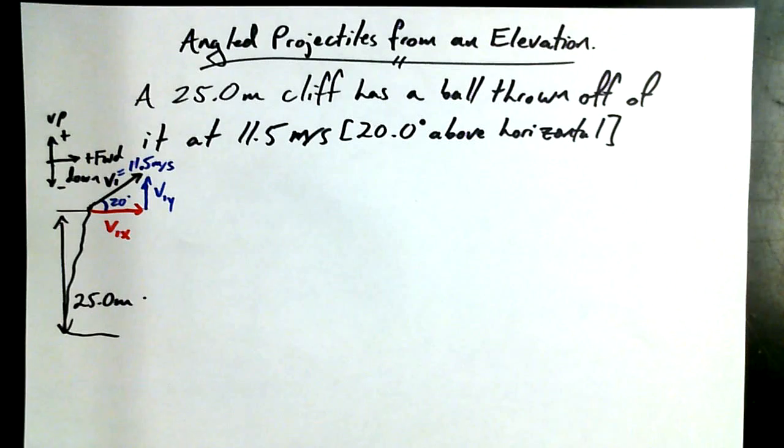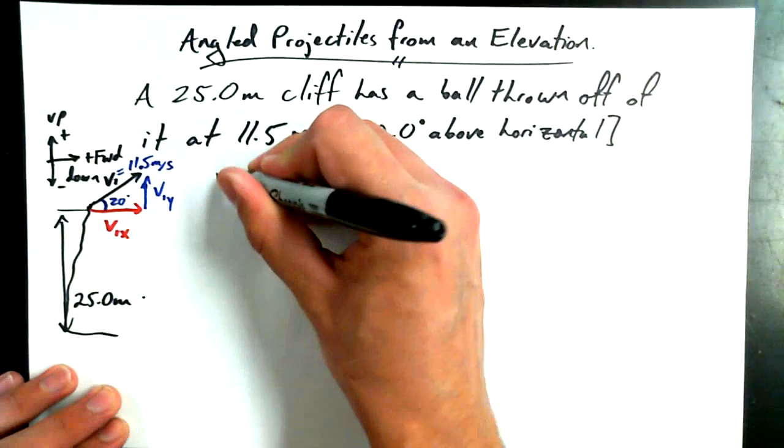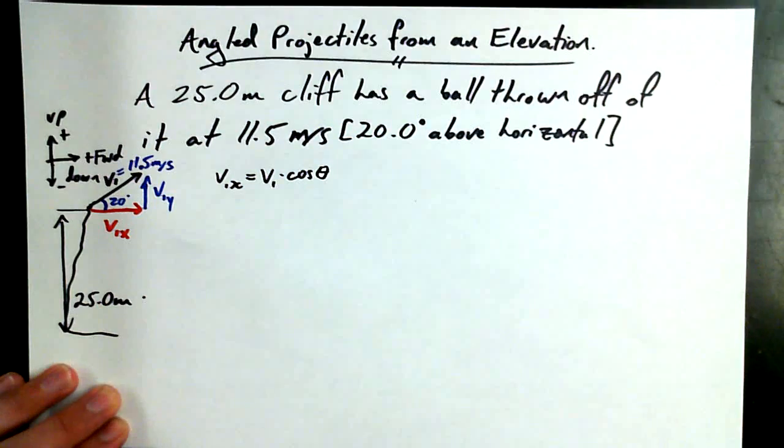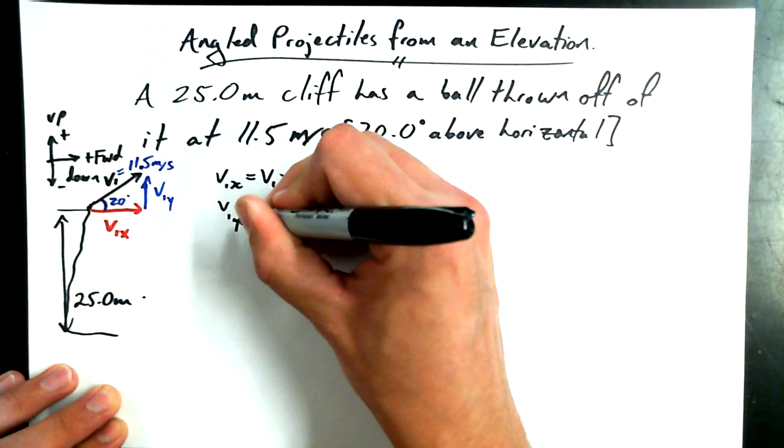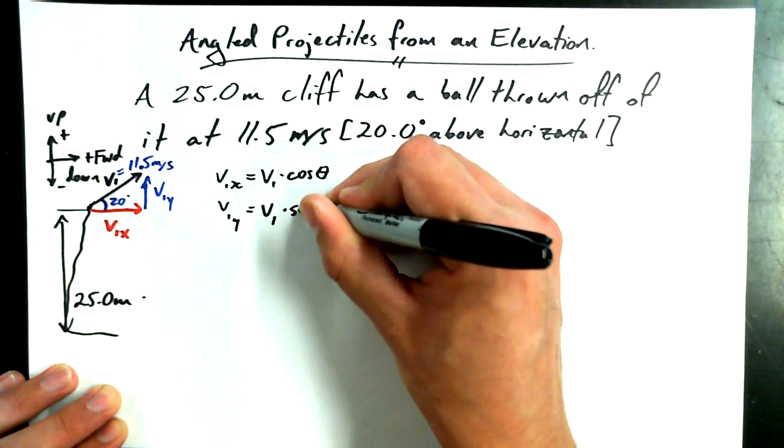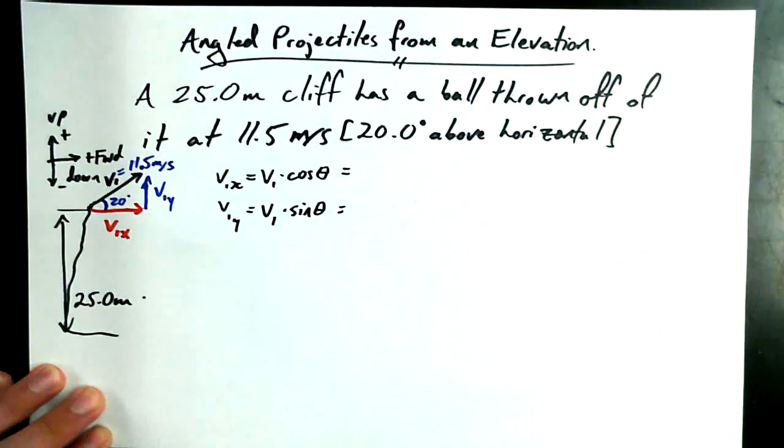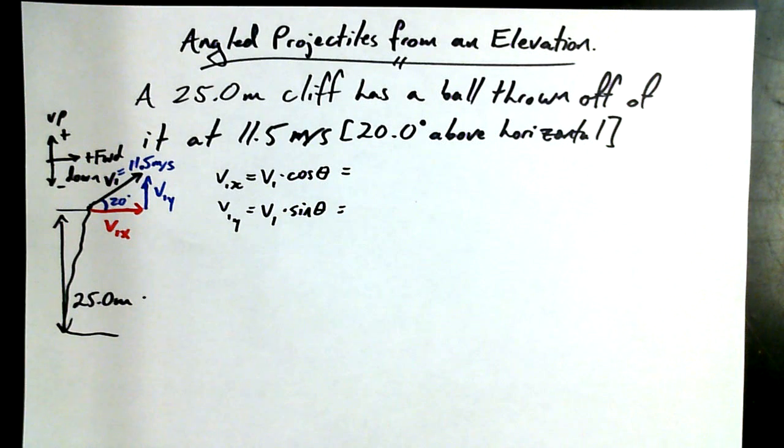As always, finding these x and y components, not a problem. V1x is going to be equal to V1 times cosine of theta, and V1y is going to be equal to V1 times sine of theta. We're going to calculate those two up fairly quickly. So V1, 11.5 times cosine of theta. Make sure you're in degree mode. And 11.5 times sine of theta is the y component.